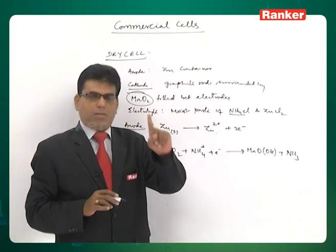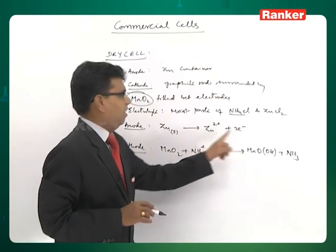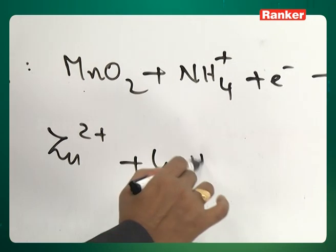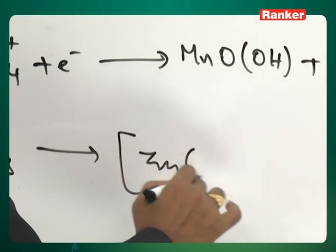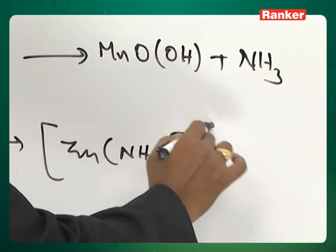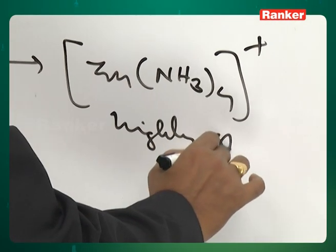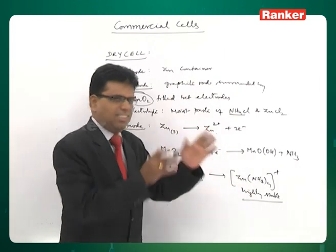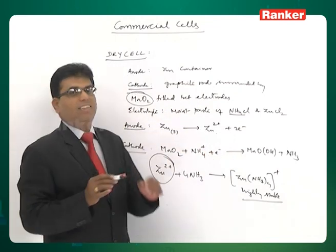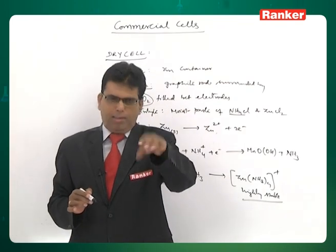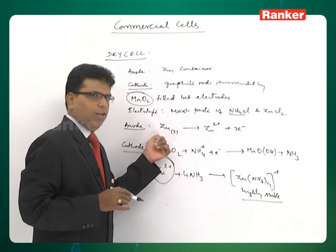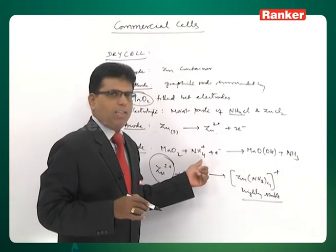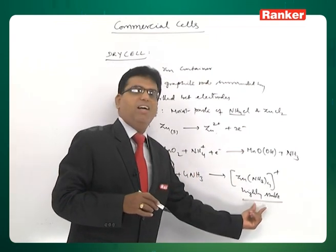This cell is non-rechargeable because the Zn²⁺ ions formed at the anode and the ammonia formed at the cathode both react together — Zn²⁺ reacts with ammonia, which acts as a ligand, to form a highly stable tetramine zinc complex. This complex is highly stable and cannot be dissociated back.